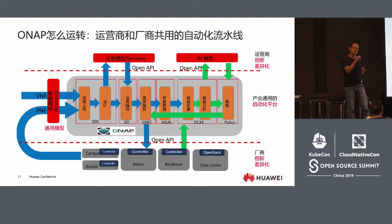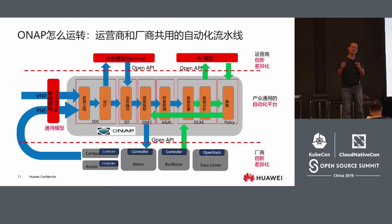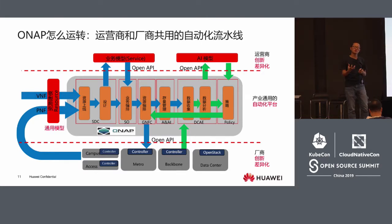First, you build the model. For example, a router or an IP network — it can be used as VPN, layer 1 VPN, layer 2 VPN, and so on. You convert this into a model, and it is just like a block of Lego.